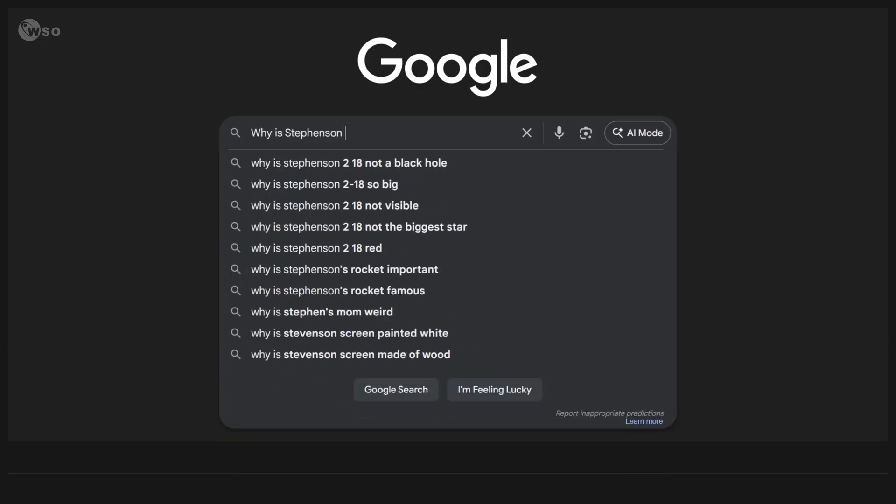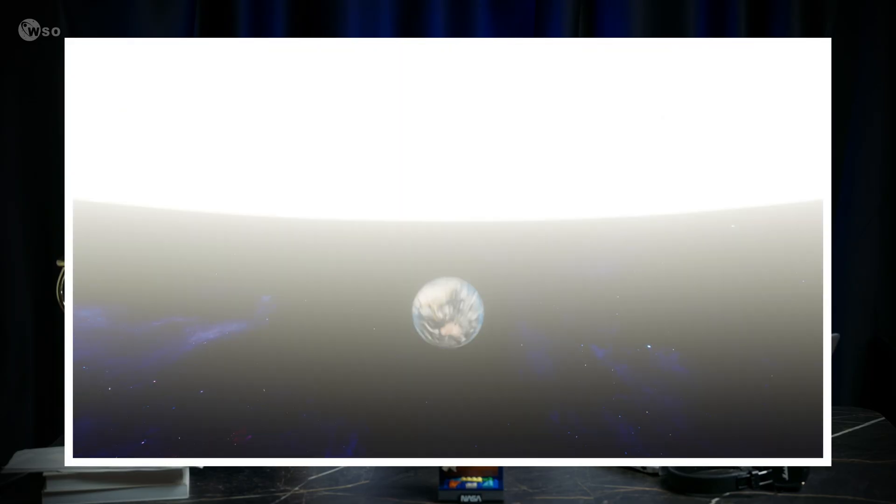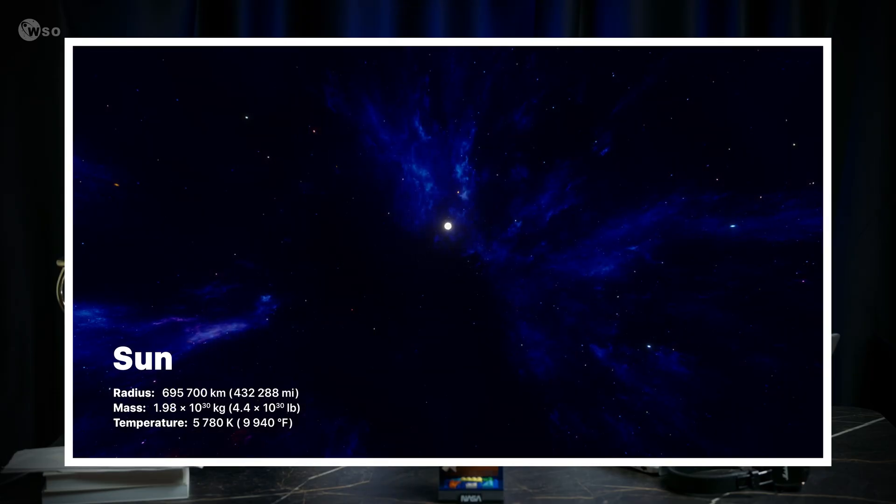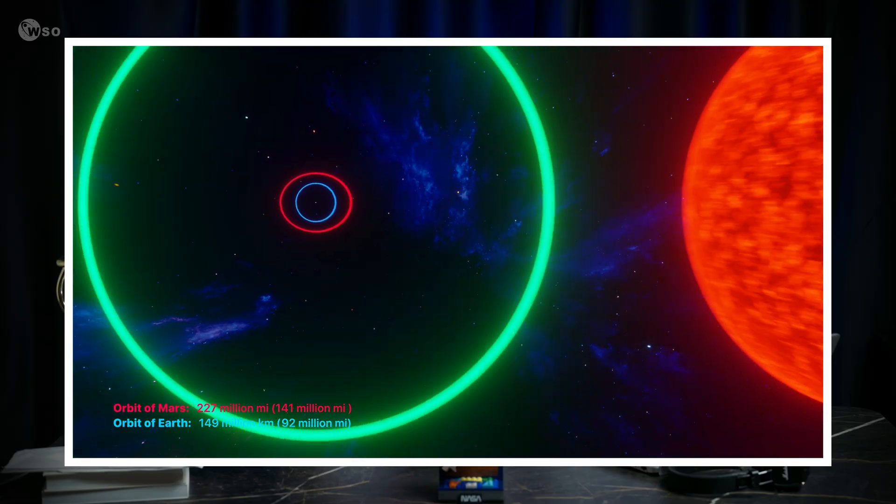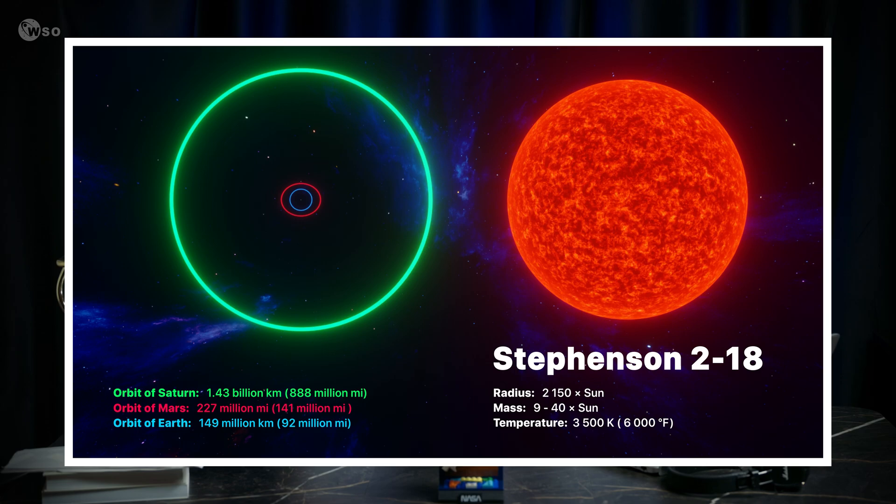Why is Stephenson 2-18 impossible? Stephenson 2-18 shouldn't even exist. Currently, the internet claims that the star is 2,100 times wider than our sun. To understand why it's not true and why the leaderboard is changing, we first need to learn the Hayashi Limit.